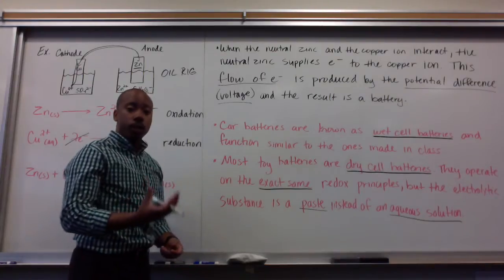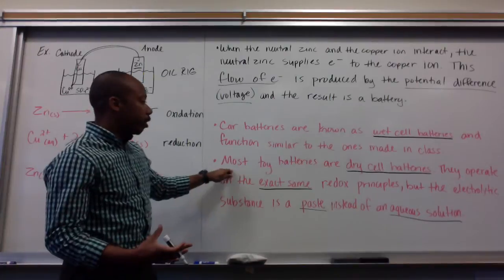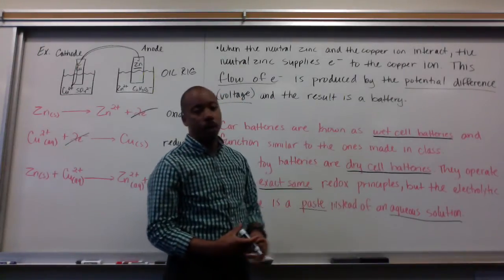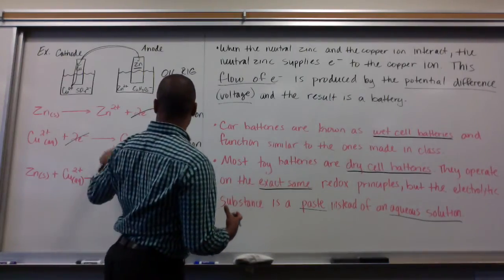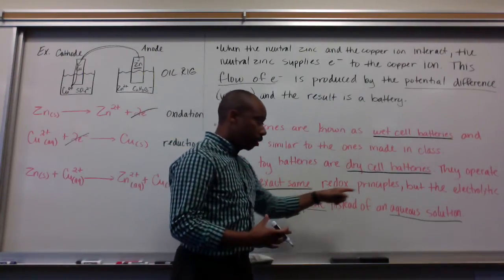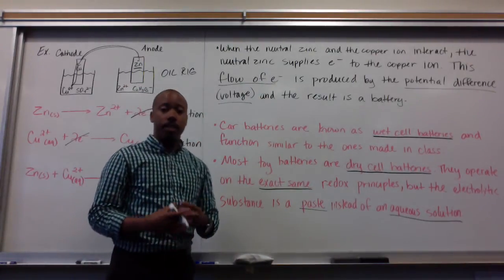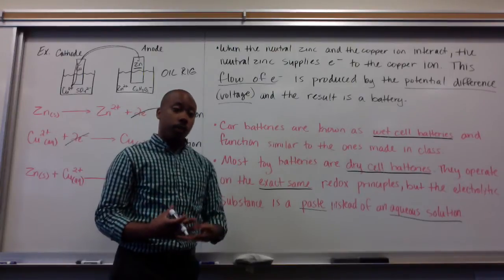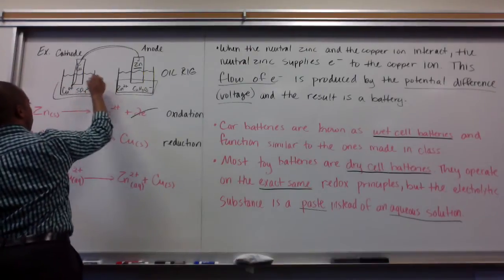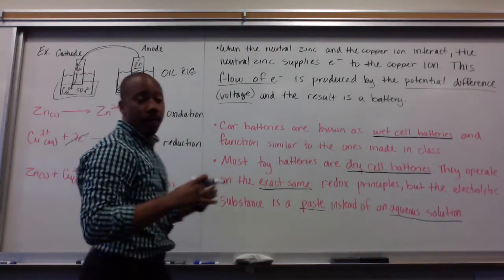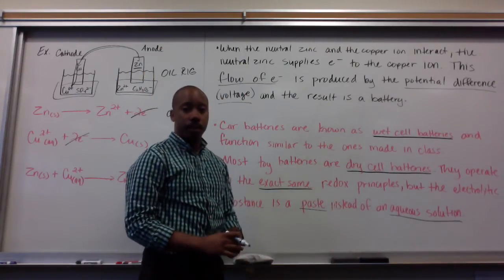Most batteries that we use in toys or remotes or any other electronic devices, they're referred to as dry cell batteries. They operate on the very same redox principles that we've displayed here, but the electrolytic substance is a paste instead of an aqueous solution. The electrolytic substance is simply for this reaction or this battery, it was this part down here, the aqueous solution. Instead of having an aqueous solution, the regular dry cell batteries just have a paste in place of it.